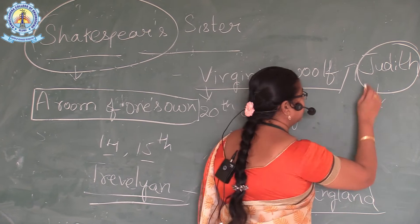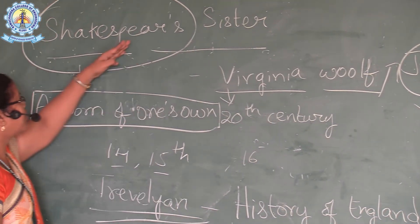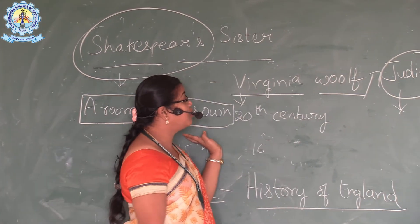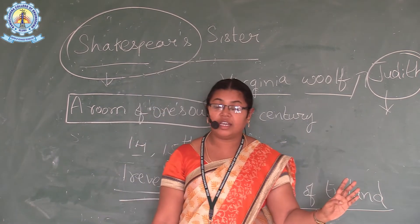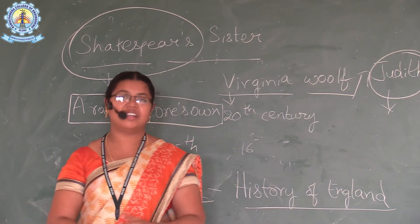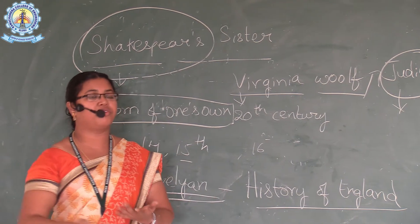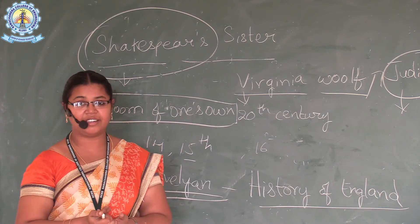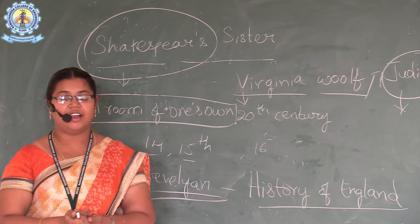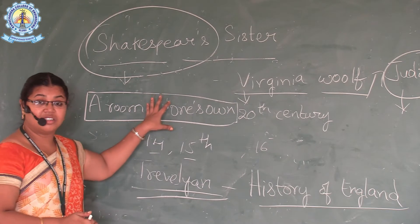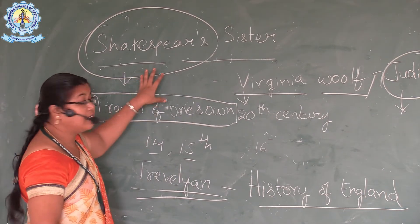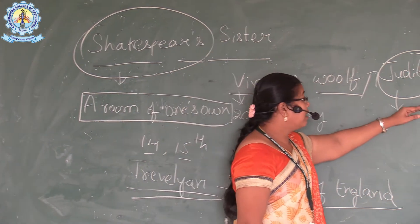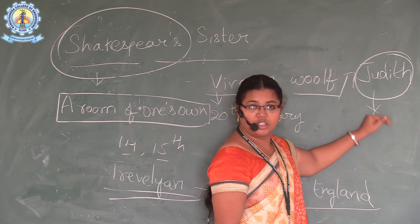Virginia Woolf started writing about an imaginary character called Judith, a sister of Shakespeare. If she had been born in those centuries alongside Shakespeare, obviously Shakespeare went to grammar school, learned Latin, went to London, joined the theater, became an actor and writer, and got a very good name as a famous and genius figure.